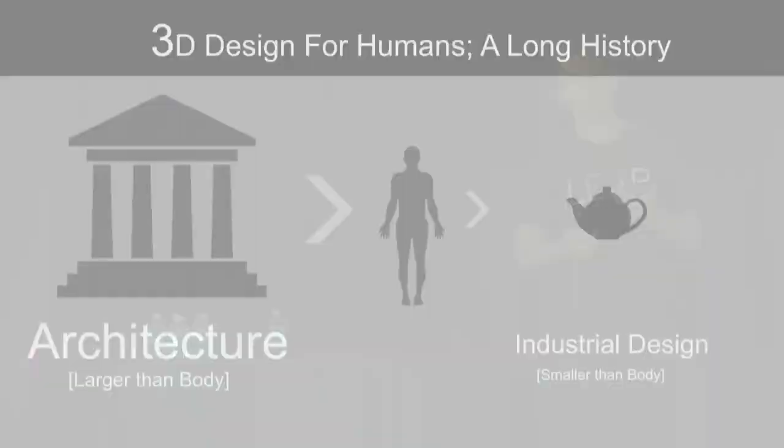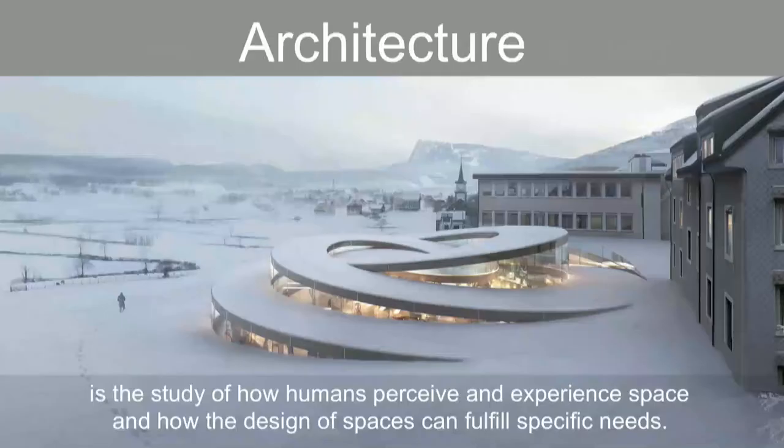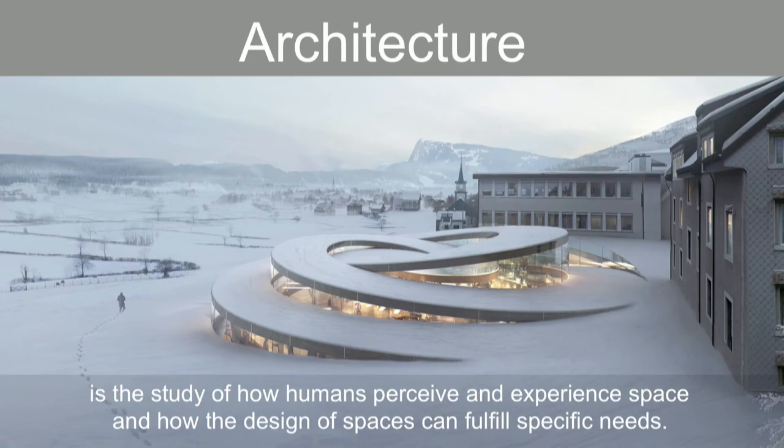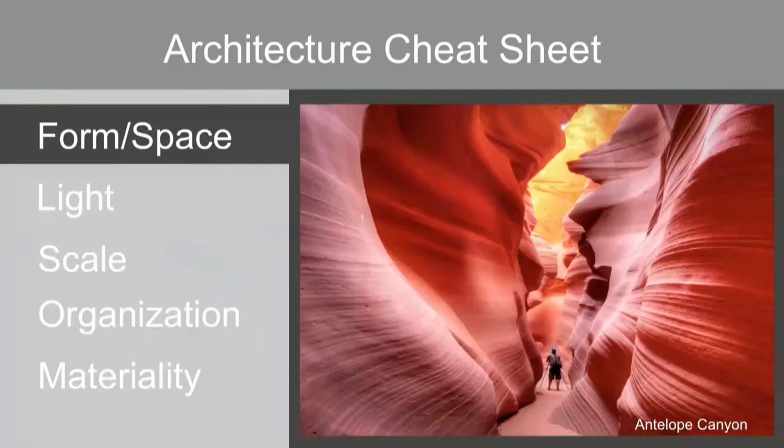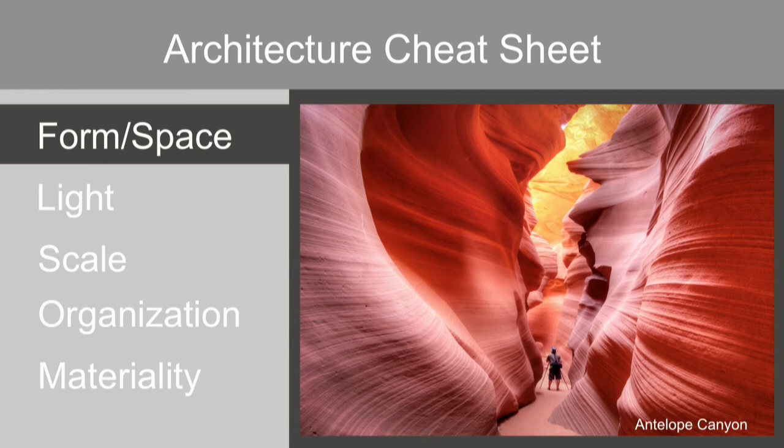So architecture, when most people think about architecture, they think about an iconic building or style or materials or structures or even an architect themselves. And while those are all important parts of architecture, the core thing, the reason for it all, is to define space. Because it is not the concrete or the wood or the glass or the steel in a building that we as humans can actually use and occupy, it is the space that those things define. Architecture then is the study of how humans perceive and experience space and how the design of spaces can fulfill specific needs. And the feeling of a space can be affected by many, many things, but five very quick and good things to remember if you're designing a virtual space or a real one are form and space. Two sides of the same coin, form defines space, space defines form. By defining one, you're defining the other. In virtual spaces, it's really interesting because form isn't even really a thing. You could put your head through a wall and there's a whole weird implications that come out of that.